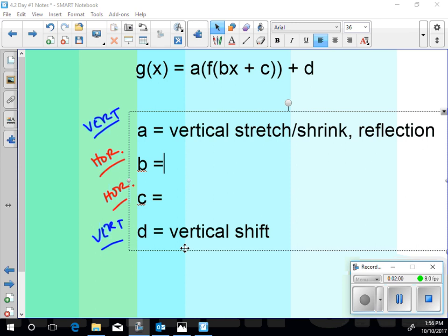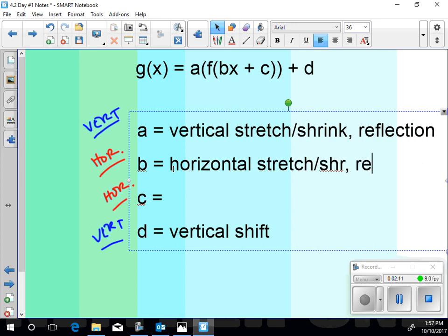How about horizontal? What is b? A horizontal stretch, shrink, or reflection. Horizontal stretch, shrink, or reflection. Okay. And c is a horizontal shift. All right, cool. I think that's pretty good for a description. Is there anything else you think we should add?